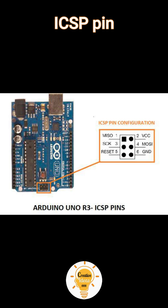ICSP Pin: The ICSP is an AVR tiny programming header for the Arduino, consisting of MOSI, MISO, SCK, Reset, VCC, and GND. It is often referred to as SPI, which could be considered as an expansion of the output. You are essentially slaving the output device to the master of the SPI bus.